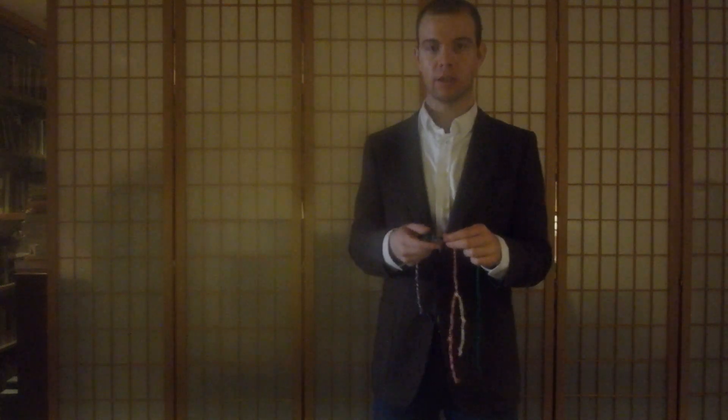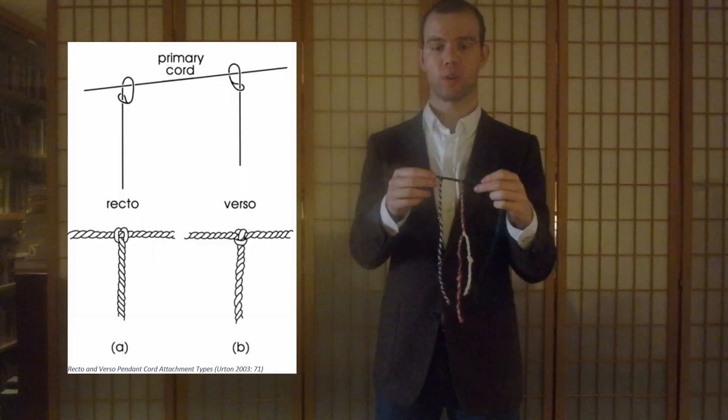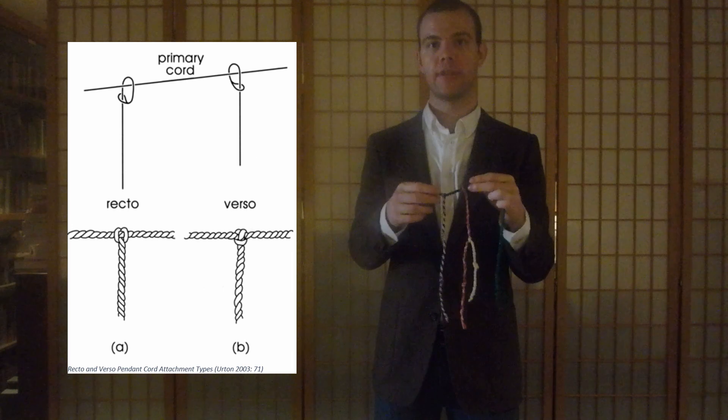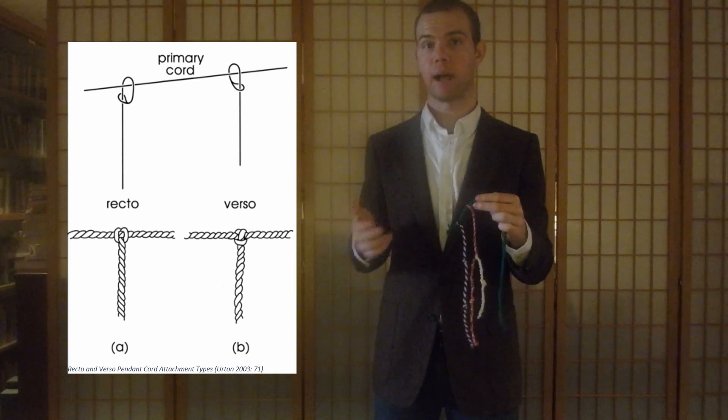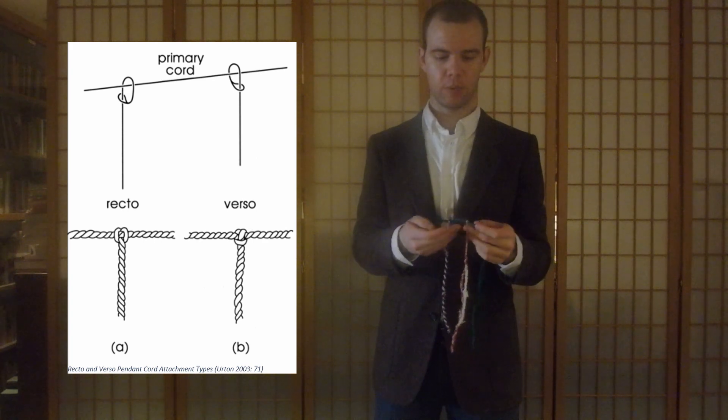Another way that pendant cords can signify information is the way in which they're attached to the primary cord. It turns out that there are two distinct ways that you can attach one of these cords to the primary cord. These can also act as signs of binary opposition, distinguishing one category from another on your kipu.